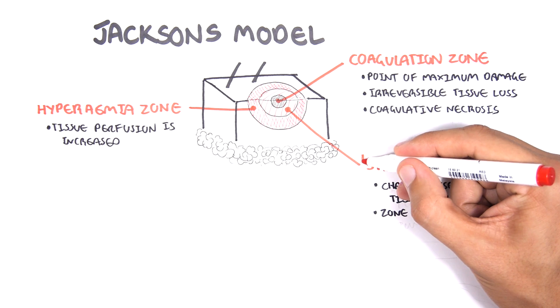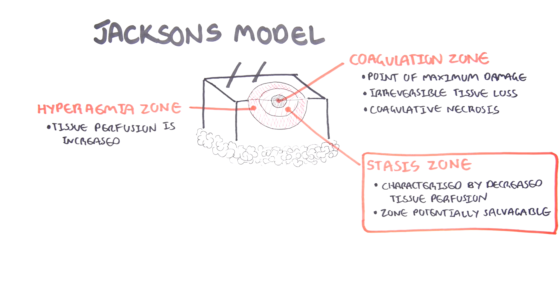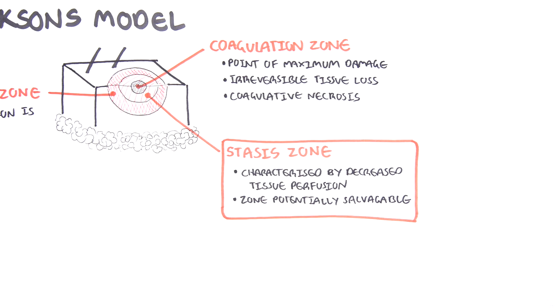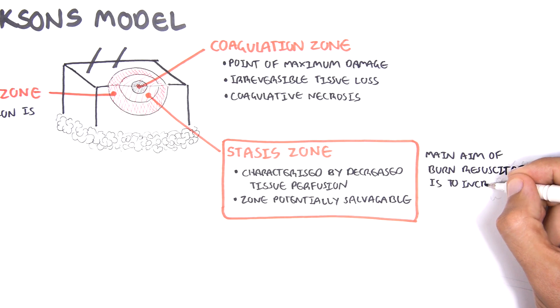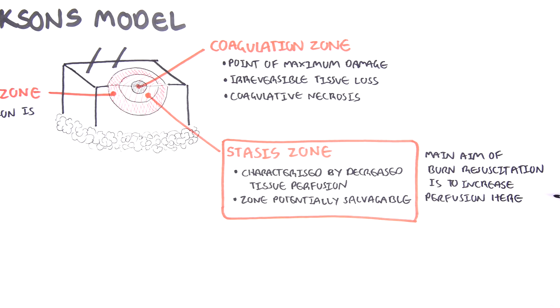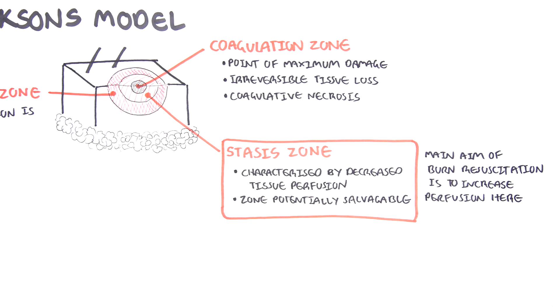Again, the stasis zone is characterized by ischemia and may progress to full necrosis unless the ischemia is reversed. Therefore, the main aim of burns resuscitation is to increase tissue perfusion here and prevent any further damage, any damage becoming irreversible.